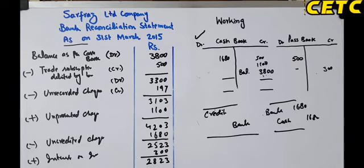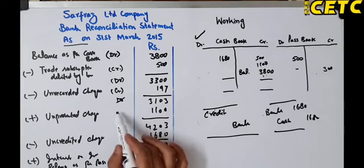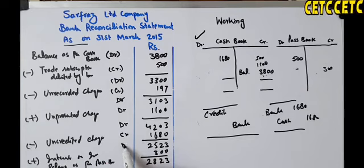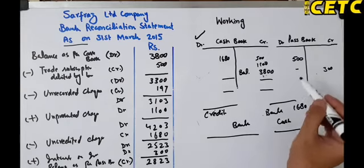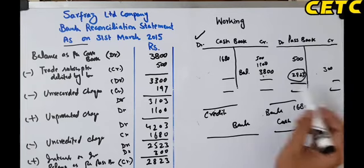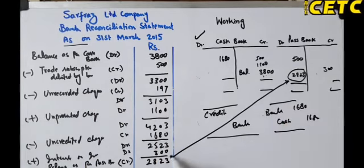After all adjustments, the resulting balance is the balance as per pass book. Our starting debit balance of Rs. 3800 was adjusted: minus Rs. 500 (trade subscription), minus Rs. 197 (unrecorded check), plus Rs. 1100 (unpresented checks), minus Rs. 1680 (uncredited checks), plus Rs. 300 (interest on investment). The final closing balance per pass book comes to Rs. 2823 — matching the bank statement balance. I hope you now understand how to prepare a bank reconciliation statement.